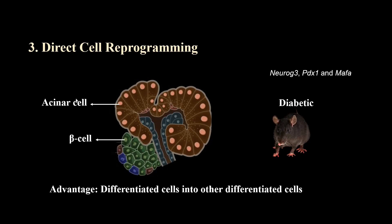Another approach for treating diseases in the future is direct genetic cell reprogramming. In 2008, a team of scientists found that the acinar cells of the pancreas can be easily converted into beta cells — which is remarkable because acinar cells are digestive enzyme-producing cells while beta cells produce insulin. In this experiment, scientists injected three genes involved in beta cell differentiation during embryogenesis into diabetic mice using viruses, and found that a significant number of acinar cells differentiated into beta cells, allowing the animals to maintain their glucose levels with low insulin doses.